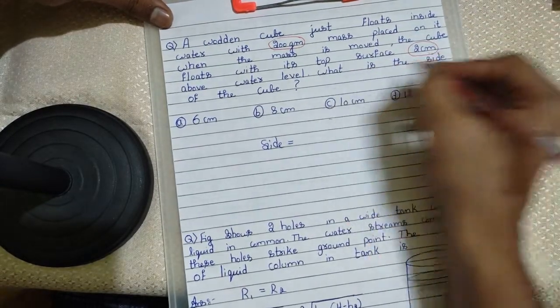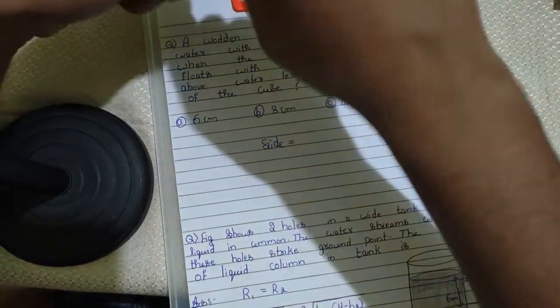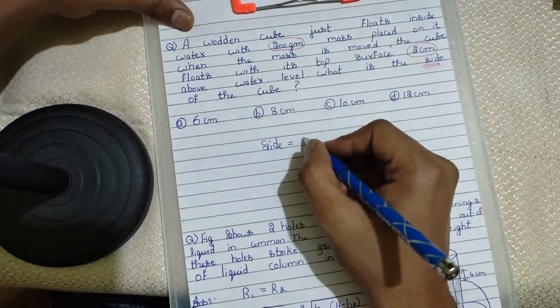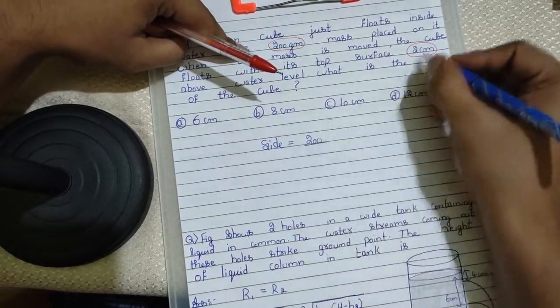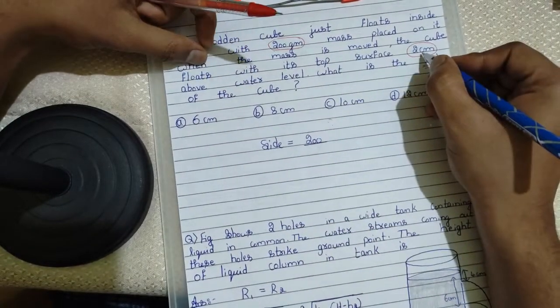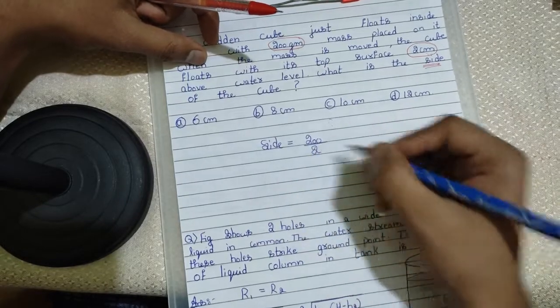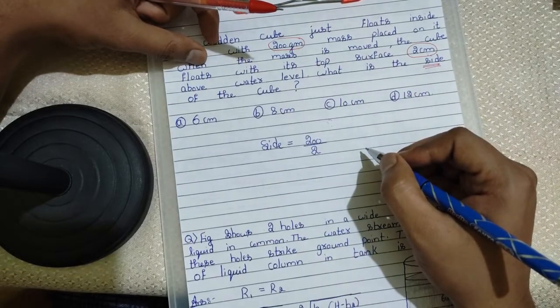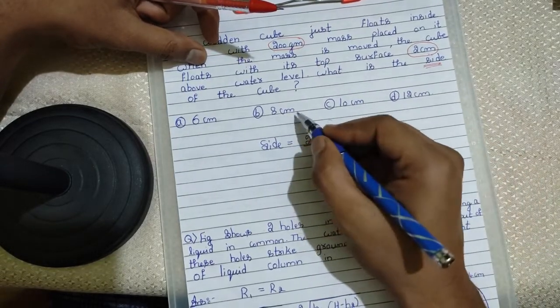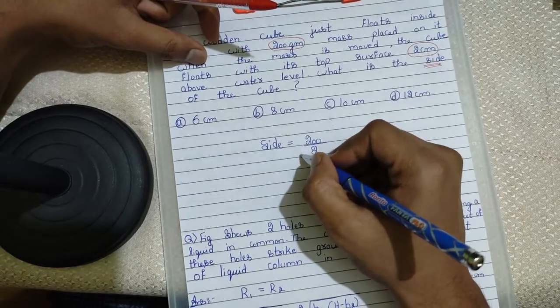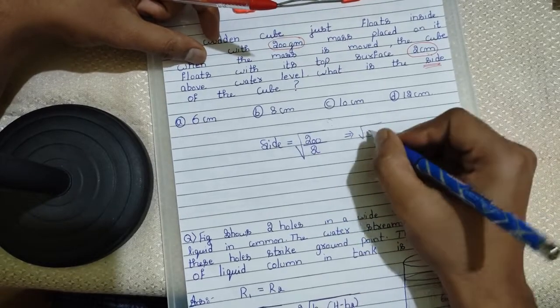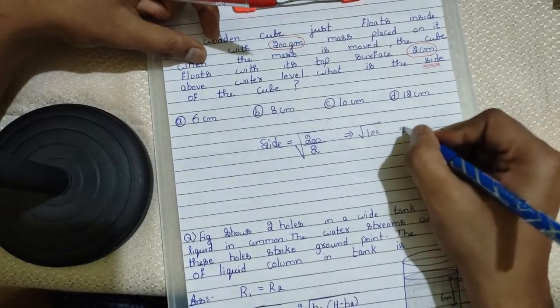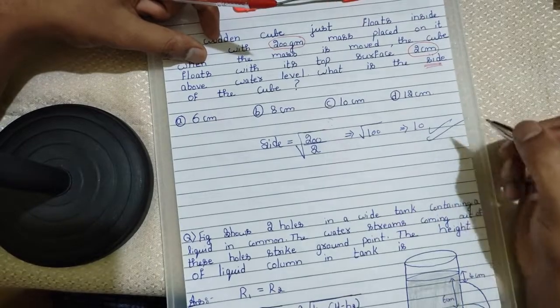So, whenever you are asked to calculate side, what you have to do: write this 200 grams mass by side, the centimeters what they have given. Don't convert into meters. Let it be in centimeters itself. Because we have to get the answer in centimeters. Now, just take a square root of this. What will be the answer? It will be 100. Now, root 100 is 10.